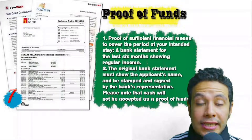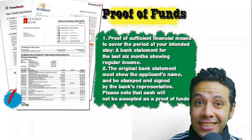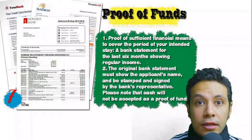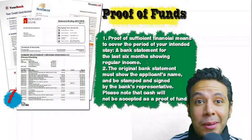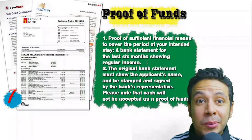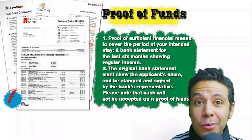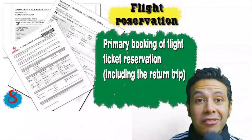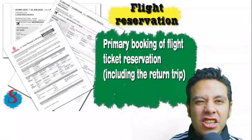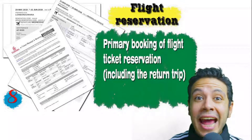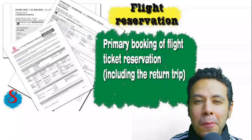You will also need to provide proof of sufficient funds, which is a bank statement showing your balance for at least six months. The original bank statement must show your name and be signed and stamped by bank representatives. Remember that cash will not be accepted as proof of funds. You should also provide a flight reservation — it could be an initial booking, but in some minor cases a confirmed booking is required — and it must include a return ticket.